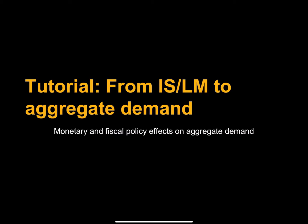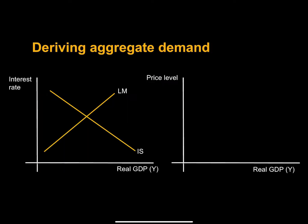In this tutorial I'd like to talk about how we derive the aggregate demand curve from our IS-LM model and then use that IS-LM model to evaluate monetary and fiscal policy and show its impact on aggregate demand. Our IS-LM model is a model of aggregate expenditures and so is our aggregate demand curve. In many modern approaches to macroeconomics you might skip over IS-LM and jump directly to aggregate demand, but in this tutorial I'm going to show you how to get there.